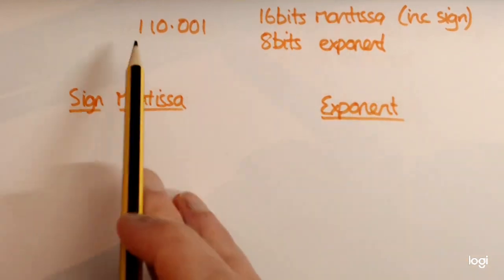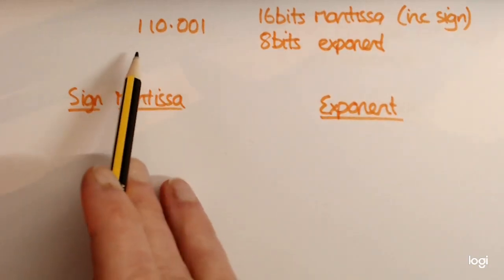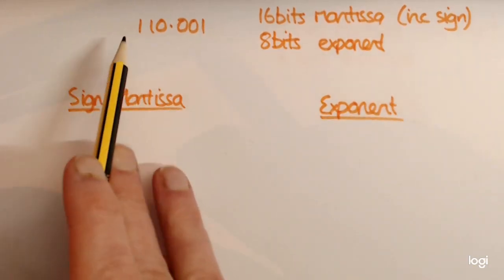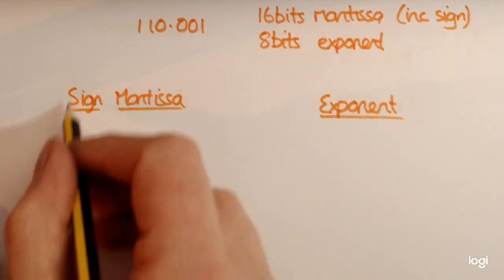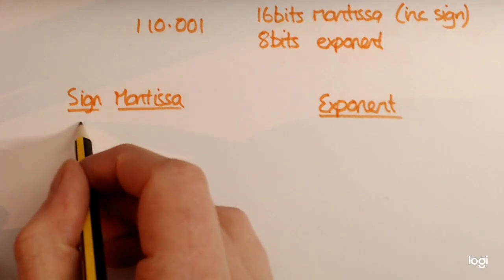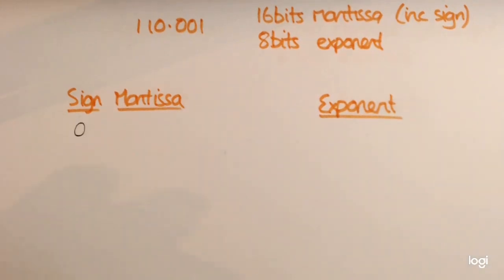When you look at the number, the first thing you see is it's not a negative number because there's no negative sign. So if that's the case we use bit 0, and that means positive.